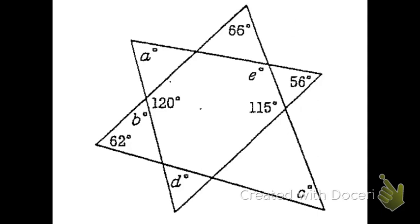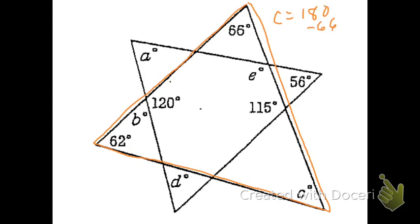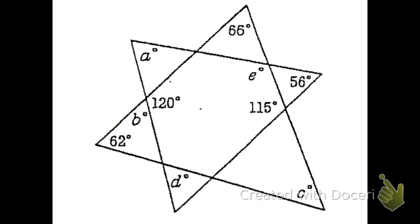Let's try to find all the lettered angle measures that are missing in this picture, using what we know about triangles — that their interior angles add up to 180 — and also that linear pairs are supplementary and vertical angles are congruent. If you look at the big triangle, two of the angles are given: 66 and 62. So to figure out angle C, we take 180 minus 66 minus 62 and get 52. Angle C is 52 degrees.